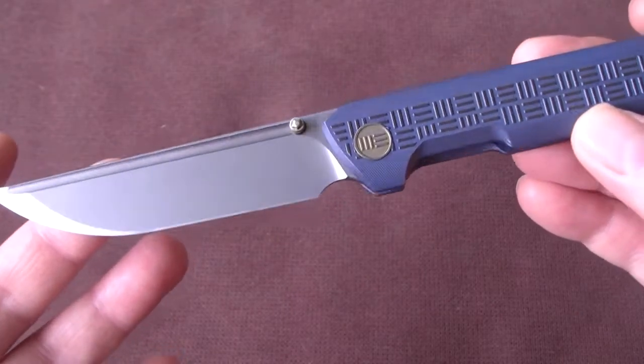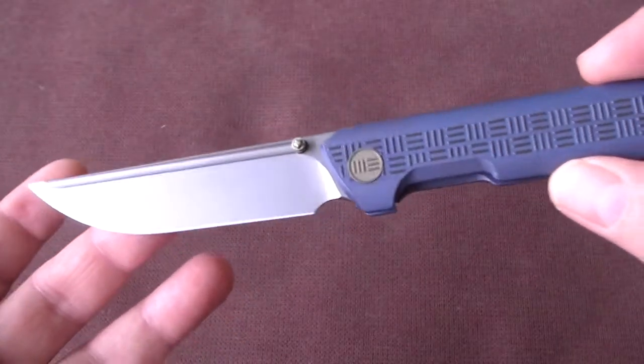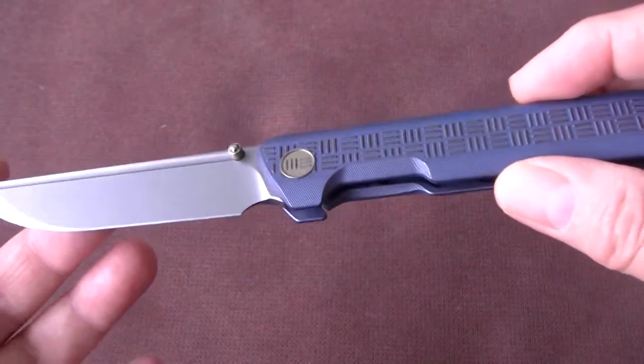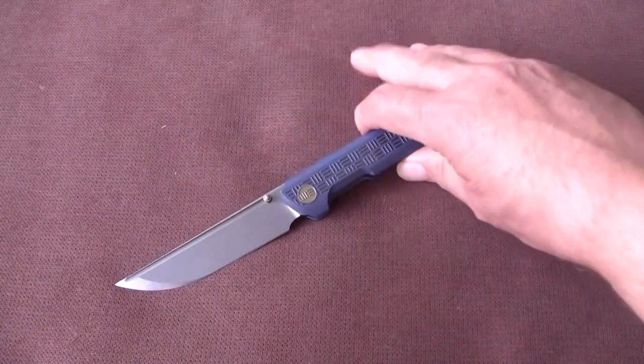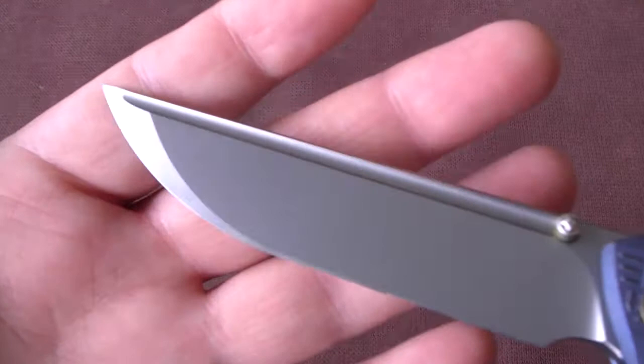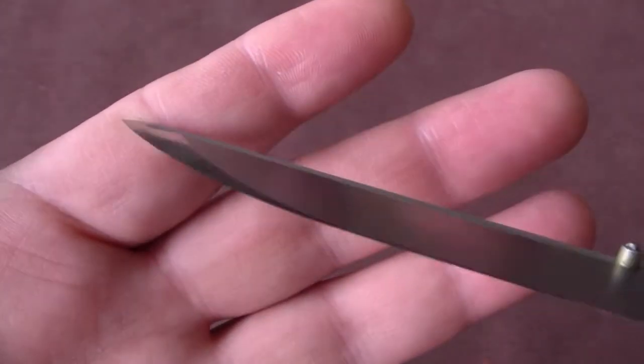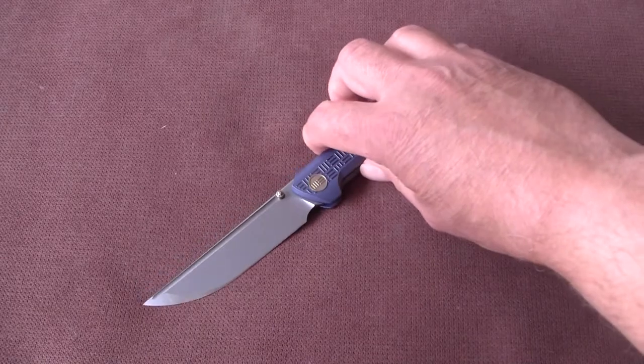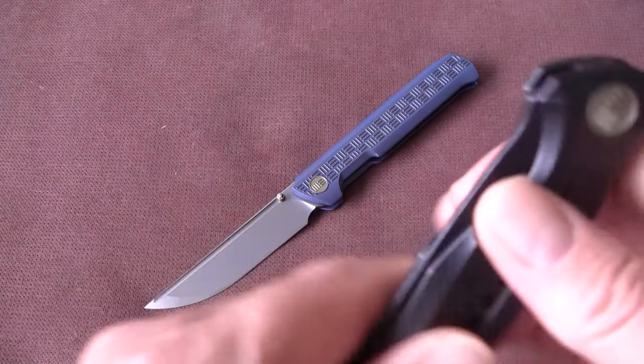It's a thumbstud only opening knife. It's a very straight, squarish-like design with a very nice special grind line. Maybe a little bit like the 618 and the 601.